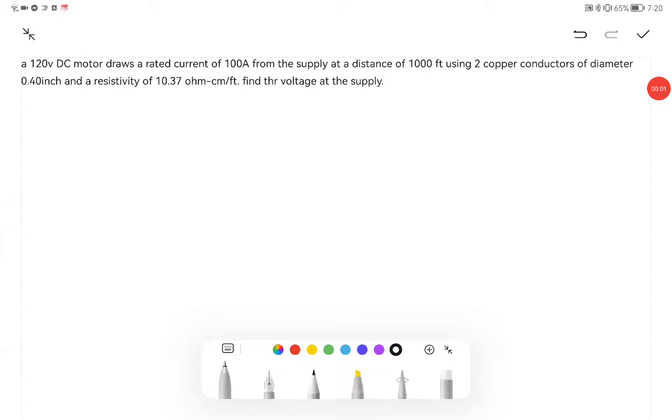A 120 volt DC voltage draws a rated current of 100 ampere from the supply at a distance of 1000 feet using two copper conductors with diameter 0.40 inch and a resistivity of 10.37 ohm centimeter per feet. Find the voltage at the supply.